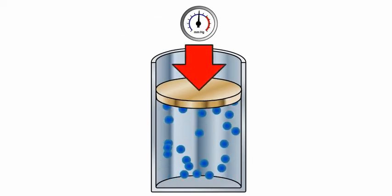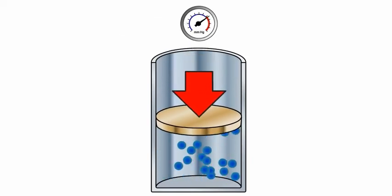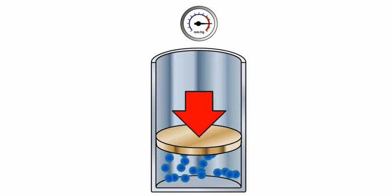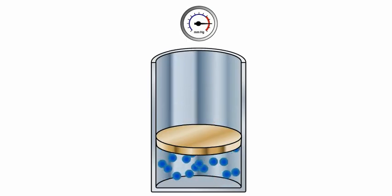If the piston is pushed down, the available space inside the cylinder is reduced, which compresses the gas. This means that the same number of gas molecules have less space to move around in, with the effect that they strike the walls of the cylinder with more frequency.